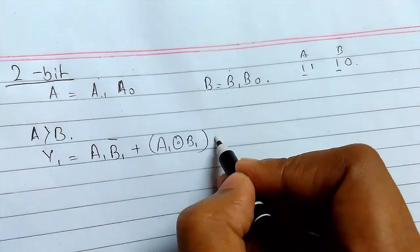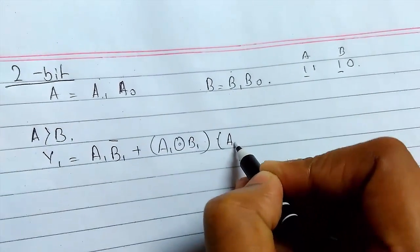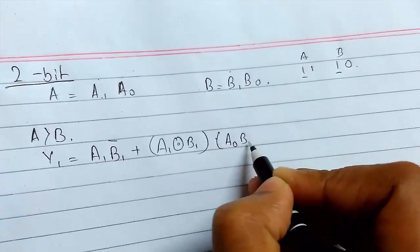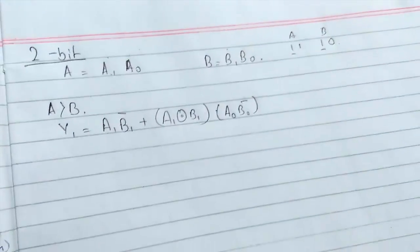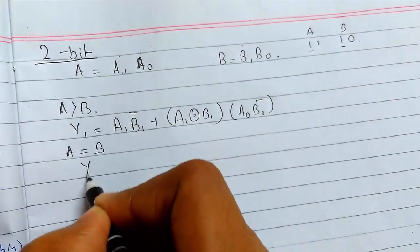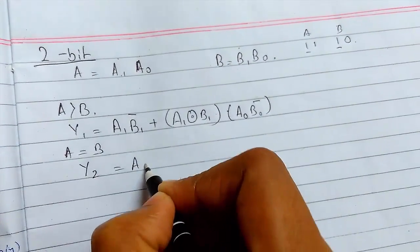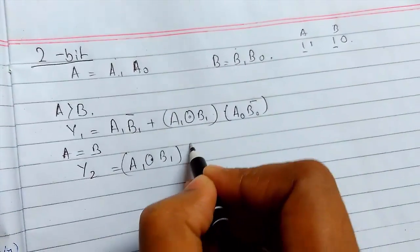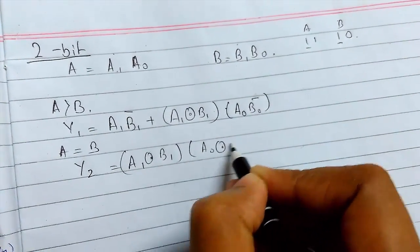And for equal, this will be A1 XNOR B1 AND A0 XNOR B0, because for equal either this can happen A1 XNOR or this can happen.